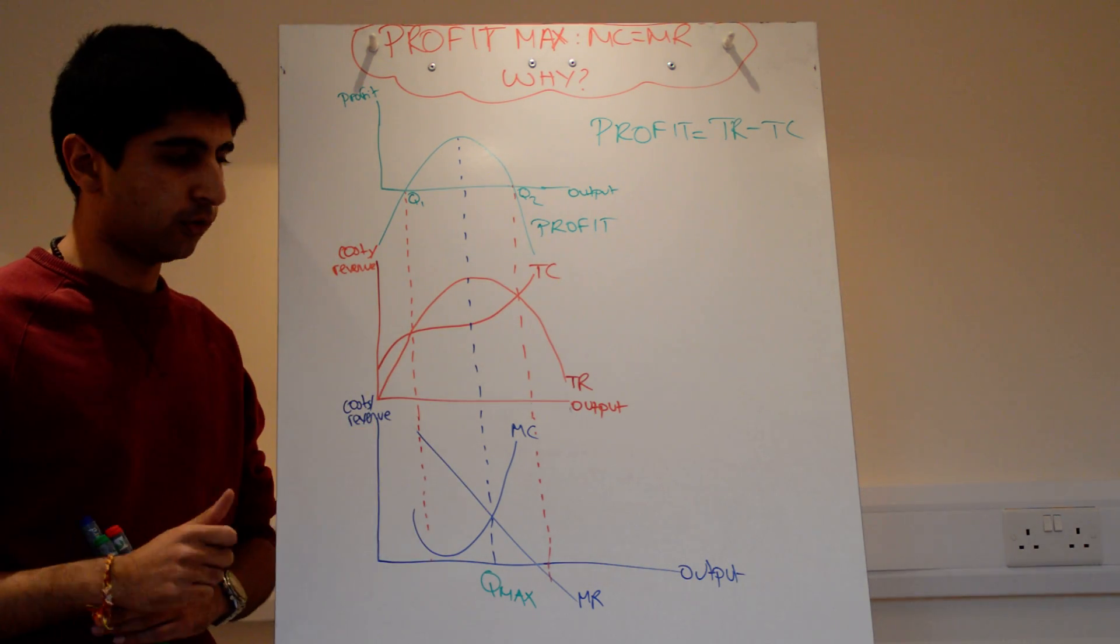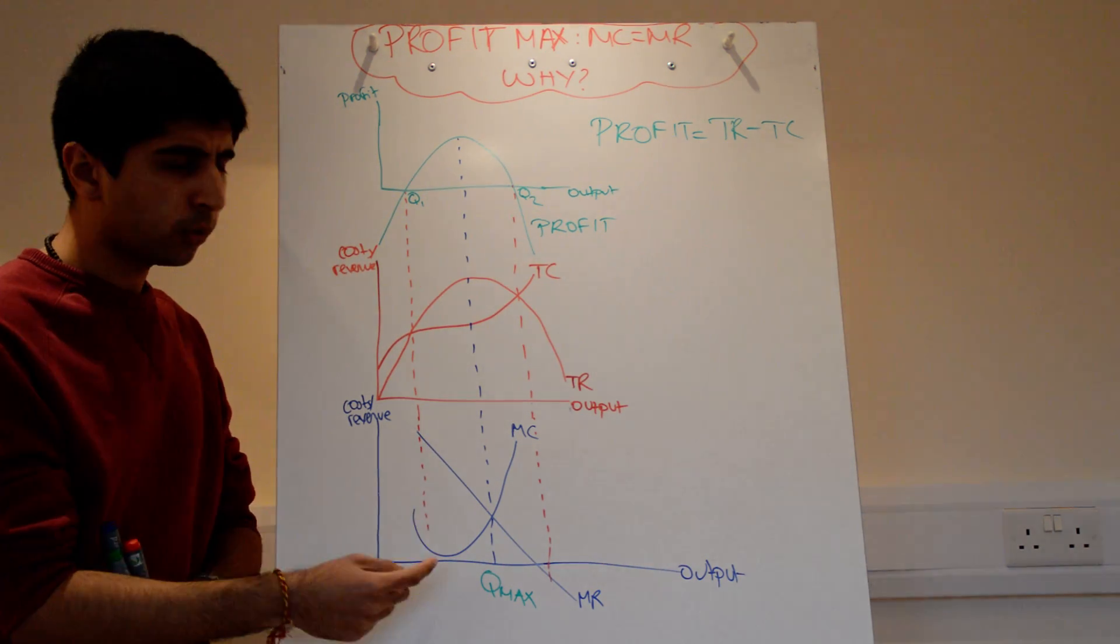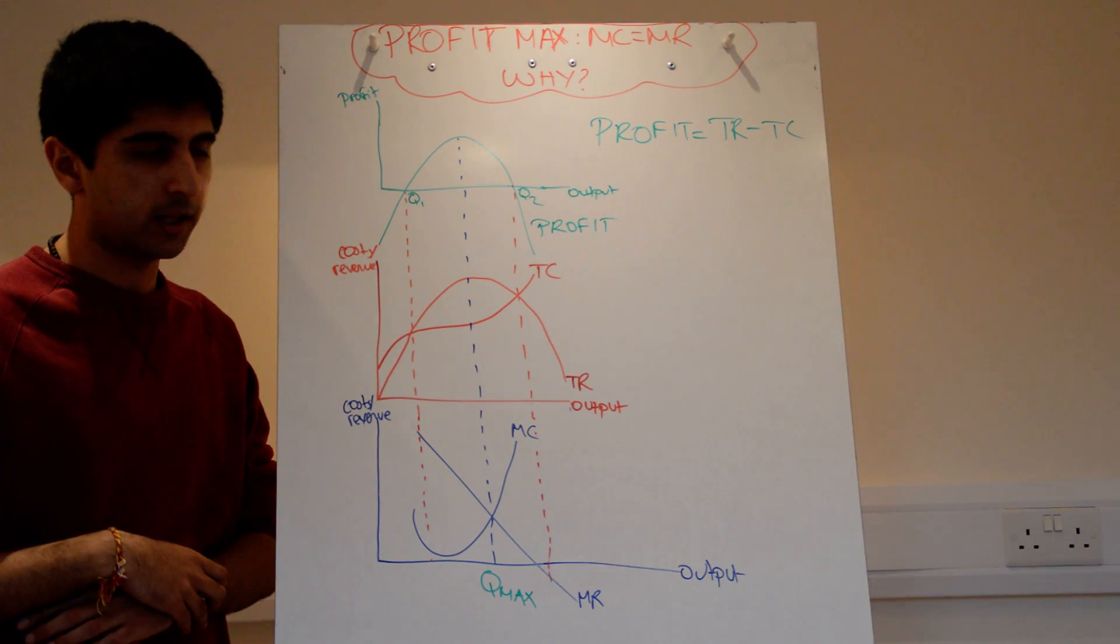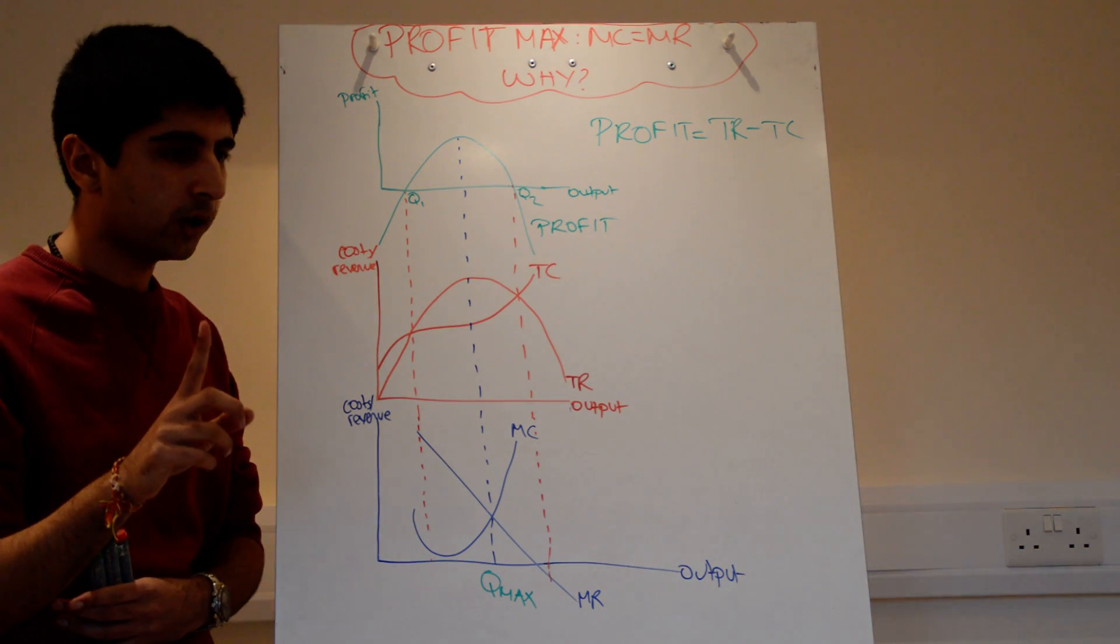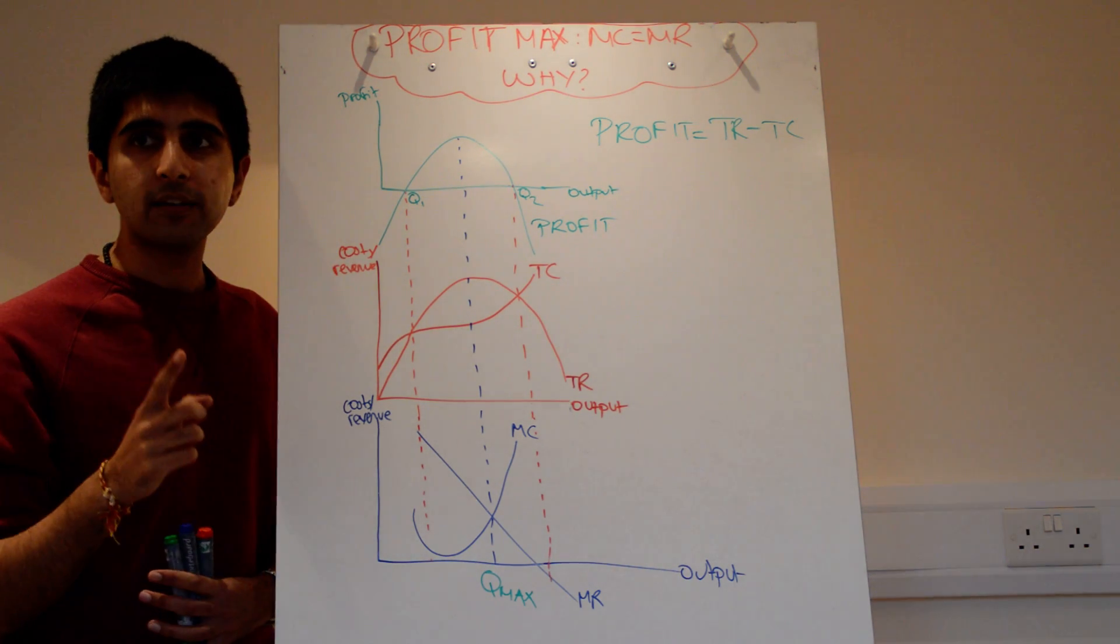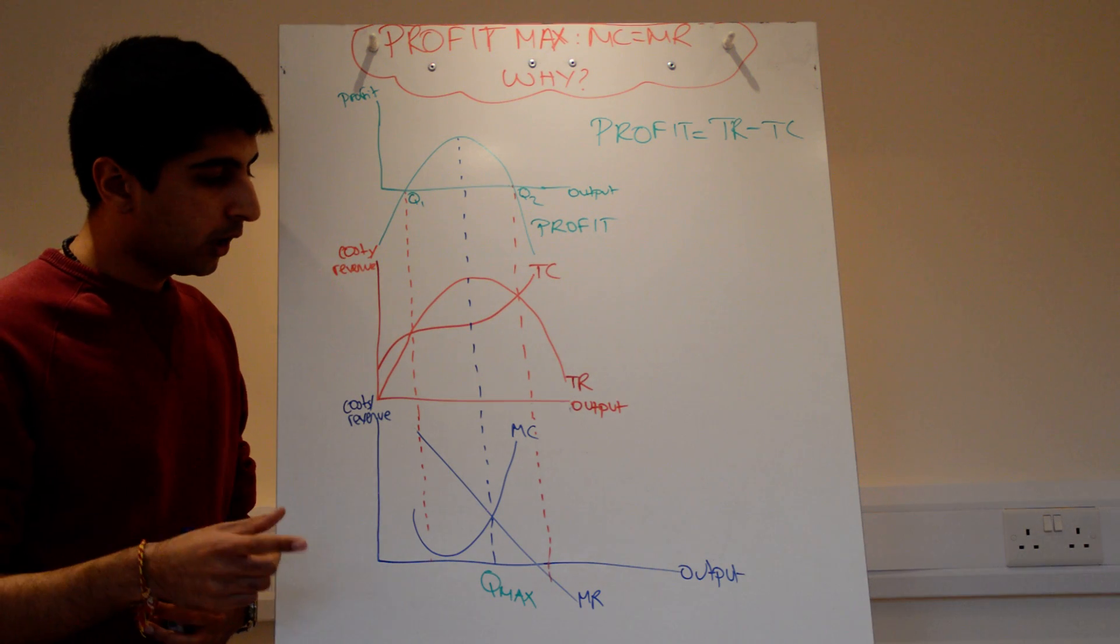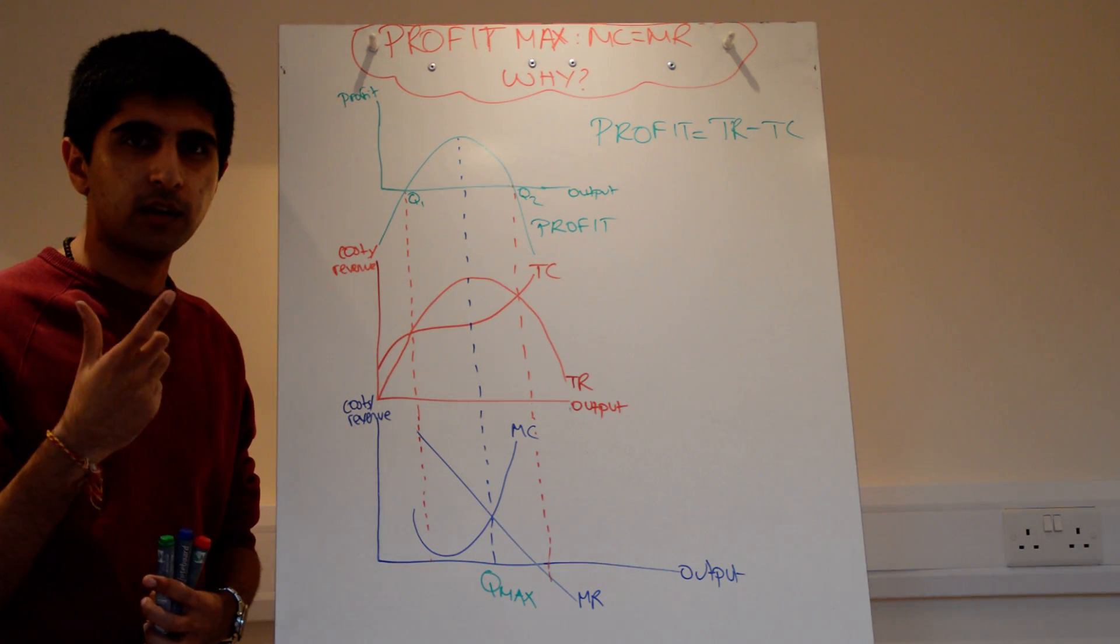Well, surely that's a great place to produce. The marginal revenue brought in is way more than the marginal cost of producing that extra unit. Surely we're maximising profits there. Well, no. It doesn't quite work because when we maximise profits, we're trying to maximise the total level of profit.